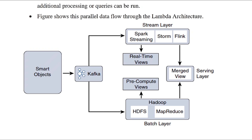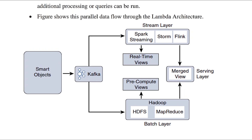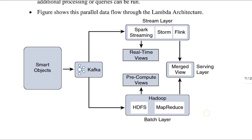The stream layer is real-time. For example, there is a CCTV — the result is in real-time. So stream handles real-time data, while batch handles historical data. You send data through Kafka as a message broker to the stream for real-time views and to the batch for historical data, then combine them into a Merged View in the serving layer.